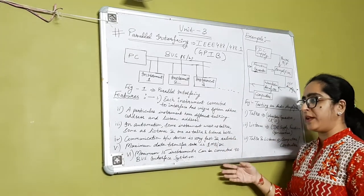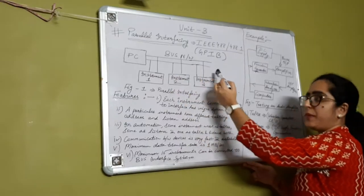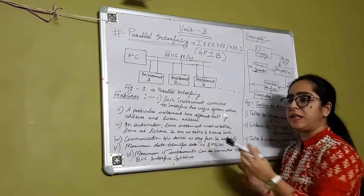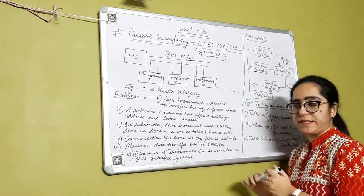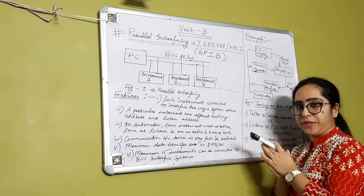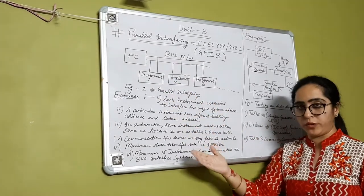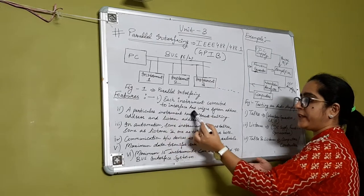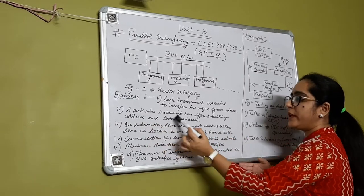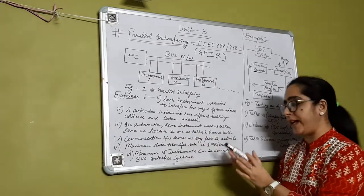The instruments connected over the communication bus each have a particular listening address and talking address. All instruments connected have their particular listening address and communication address. This addressing is done through the address mode. Each instrument connected to the interface has a unique system address, which is assigned through the addressing mode.